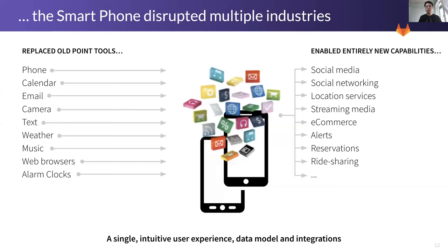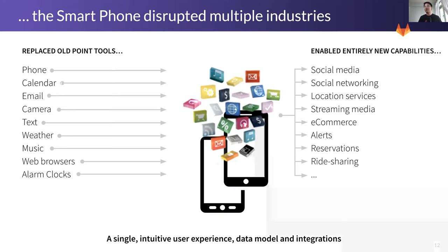The first iPhone was really where you saw all these different tools come together in a single device. On an iPhone, you could have your phone, calendar, camera, weather, music, web browser, and it replaced your alarm clock. In the first iteration, the camera wasn't the greatest, but now — I don't even know where we are with iPhone — the features and functions have really improved over time.